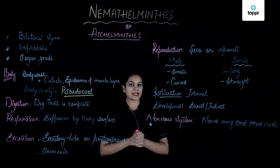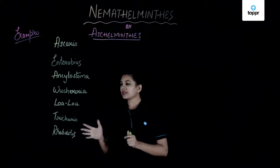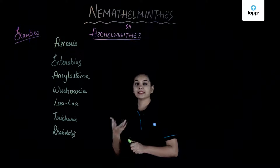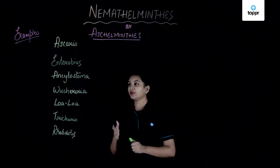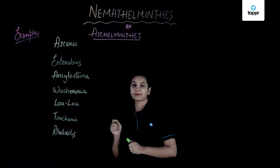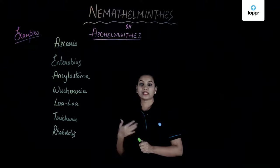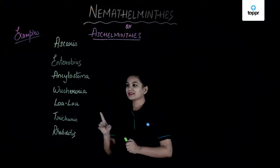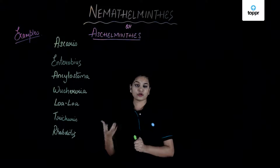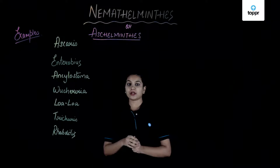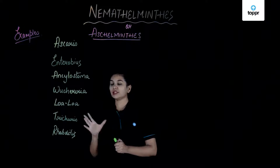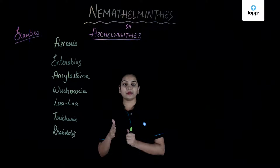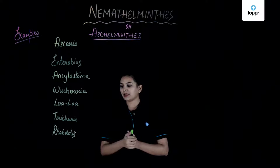Let's look at some examples of Nemathelminths. Ascaris is called the intestinal worm. Enterobius is called the pinworm. Ancylostoma is called the hookworm. Next is Wuchereria, which is very important to remember — it is carried by a vector called the Culex mosquito and causes a disease called Elephantiasis. Loa loa is called the eyeworm. Trichuris is called the whipworm, also found in the intestine.